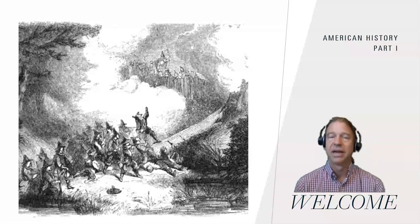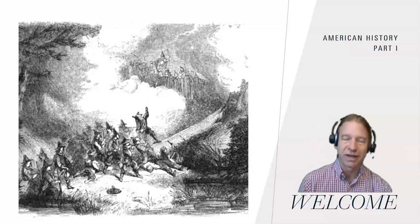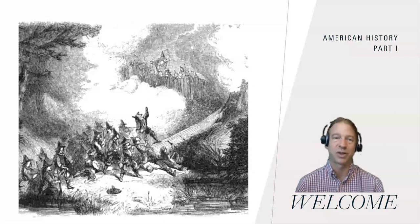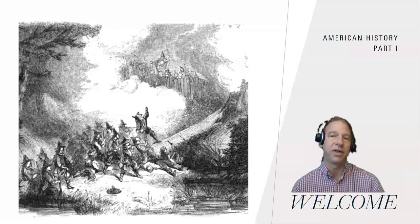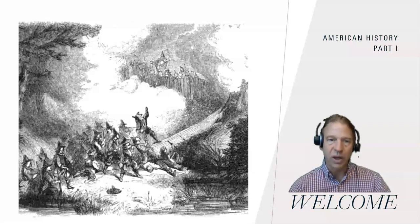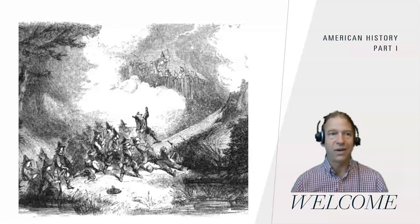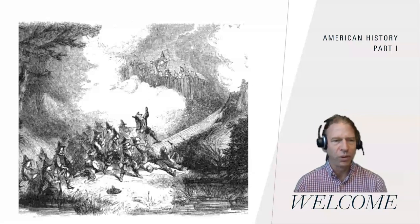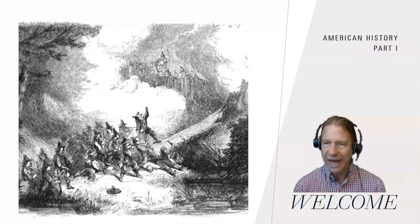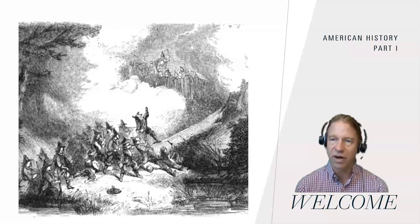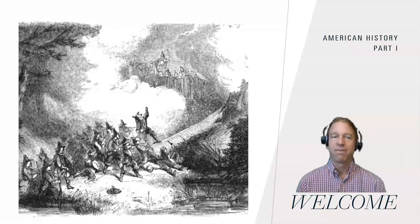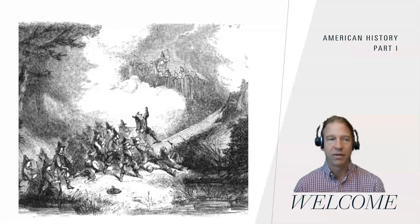We'll examine the first failed attempt at a government in the United States, the Articles of Confederation. We'll then examine the Constitution, the early republic, the beginning and roots of the two-party system, the War of 1812, democracy in America, the development of a slave society in the American South, and the development of industrial economics in the American North — and how these things sowed the seeds for a crisis that eventually led to the American Civil War. We'll look at the roots of the Civil War and the big questions surrounding slavery, as well as the Reconstruction period and how it created a new foundation for the promise of equality and justice in the United States.